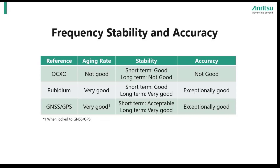The next natural question should be: what causes instruments to behave in any of the scenarios we have just shared? For signal generators, most of the behavior we have just explored would be attributed to the frequency reference. To make this point clear, we have a table that shows three references, aging rate contributions, and their respective stability and accuracy qualities.